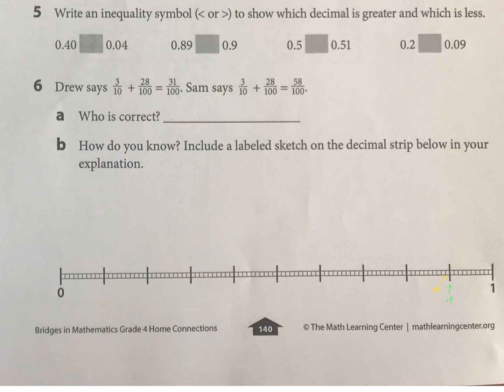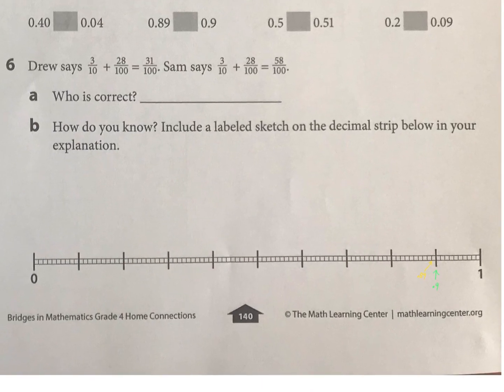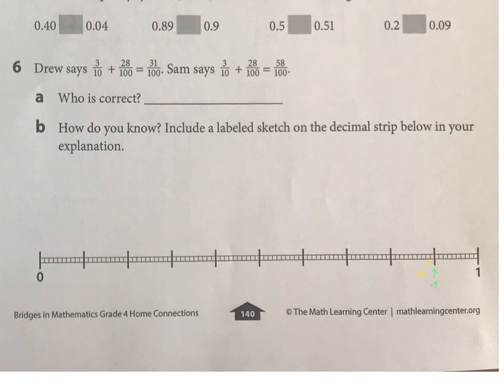So who's correct, first of all? And then to do the labeled sketch, we haven't done this before, but basically, if you did 3 tenths plus 28 hundredths, you can draw little arrows. So 3 tenths is here.